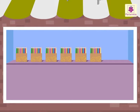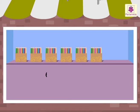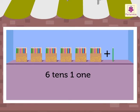Look, six tens and zero ones is 60. Six tens and one one is sixty-one. Six tens and two ones is sixty-two.